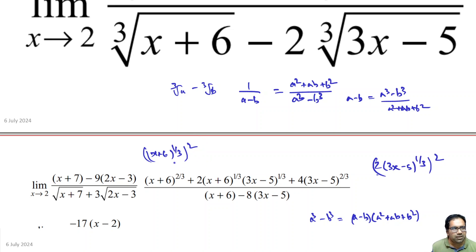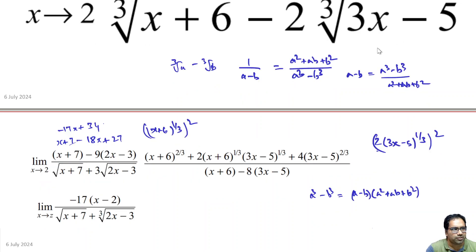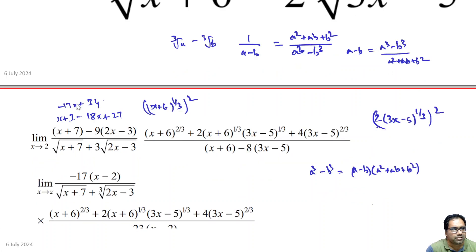Now let us simplify. The numerator from the square root rationalization becomes (x+7) minus 9·(2x-3), which equals x+7 minus 18x+27, that is -17x+34, which factors as -17·(x-2). That is our numerator from this part.